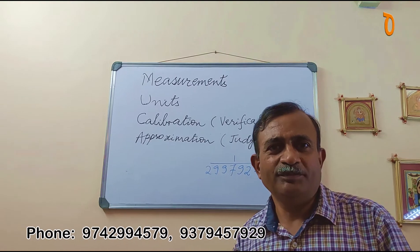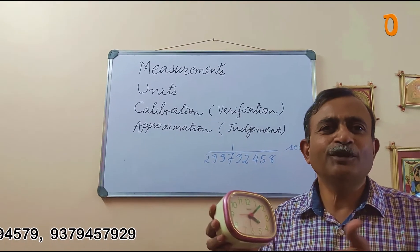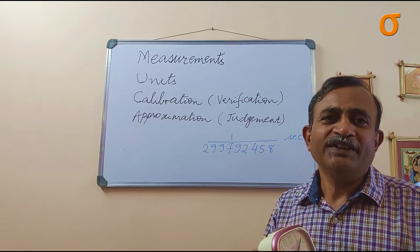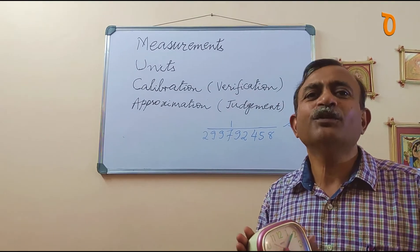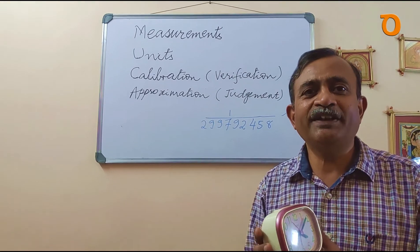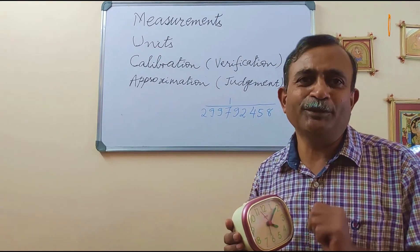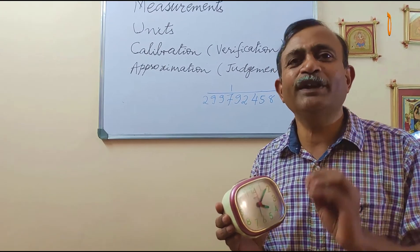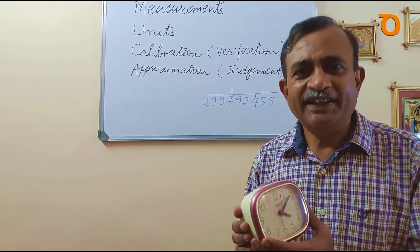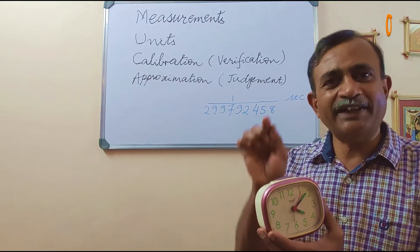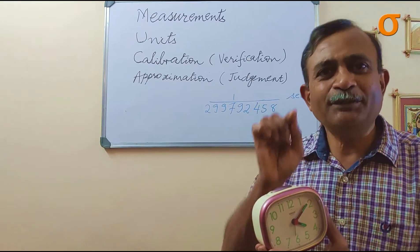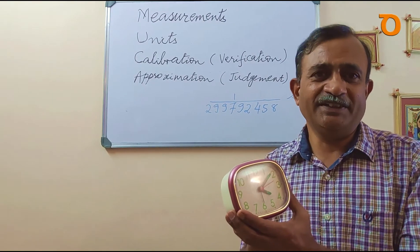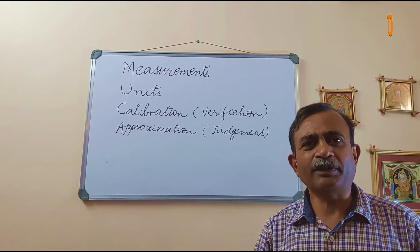Similarly, like at home I am using a clock. I am not doing any business using this clock, but I should know that this clock is showing me the correct time. So once in a while I do calibrate with the clock which is there in my mobile. So I assume that the clock or the time which is shown in my mobile phone is very accurate. And if this clock is not showing the time as per the clock in my mobile phone, then I adjust it. This is called calibration.